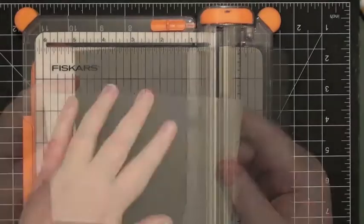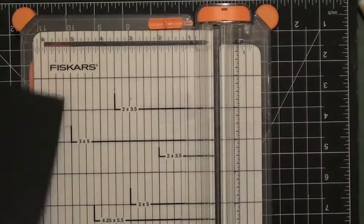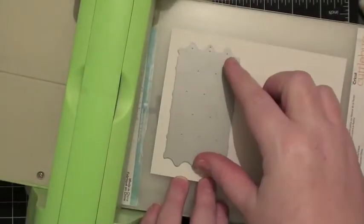So I'm just trimming down some white and grey cardstock and also a scrap piece of black. Now the white and the grey are trimmed to about four inches by about five and three quarters or thereabouts.